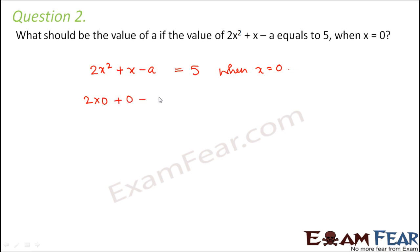2 into 0 plus 0 minus a is equal to 5. So 2 into 0 would be 0. So 0 plus 0 minus a is equal to 5. So 0 plus 0 would be 0. So minus a is equal to 5. Therefore, a is equal to minus 5.